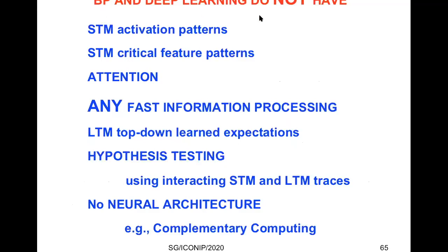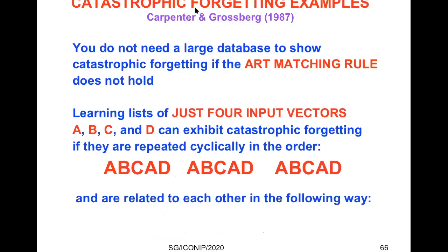In summary, backpropagation and deep learning do not have short-term memory activation patterns, including critical feature patterns, so they cannot pay attention. They do not have fast information processing, nor do they have long-term memory top-down learned expectations, so they cannot carry out hypothesis testing using interactions between short-term and long-term memory traces. There is no neural architecture — just an algorithm — in great contrast with complementary computing, which discusses the global organization of our brains. From the very start, Carpenter and I showed how easy it is to get catastrophic forgetting when we shut down the ART matching rule, demonstrating that with just four input vectors A, B, C, D, presented in repeated sequences, learning never settles down without the matching rule.